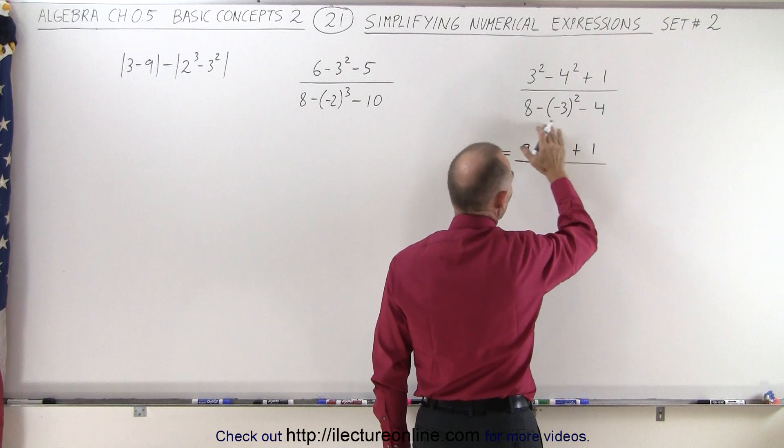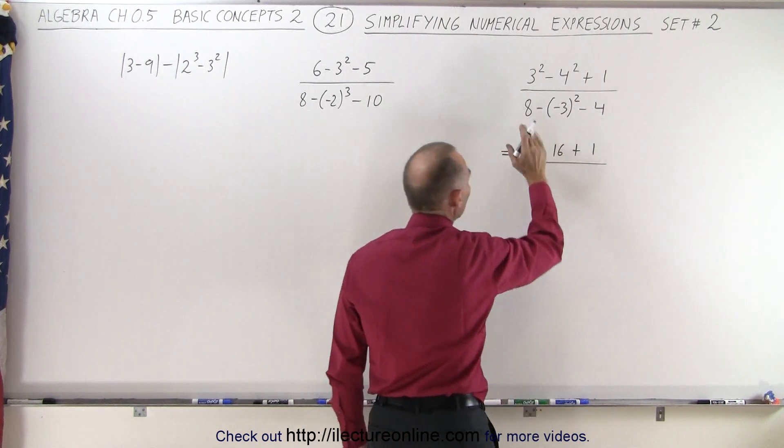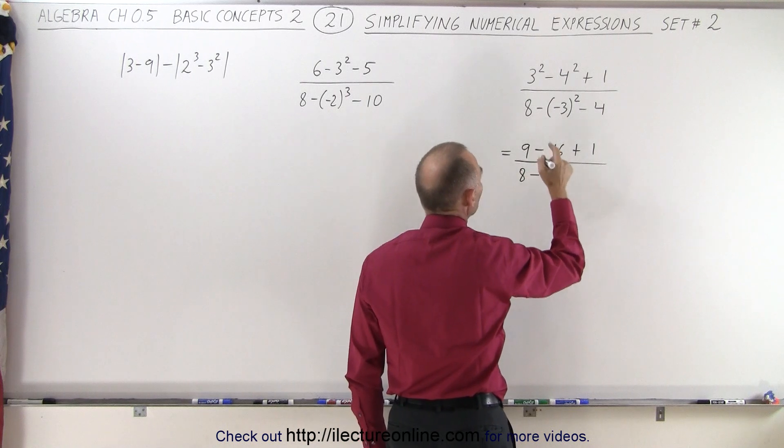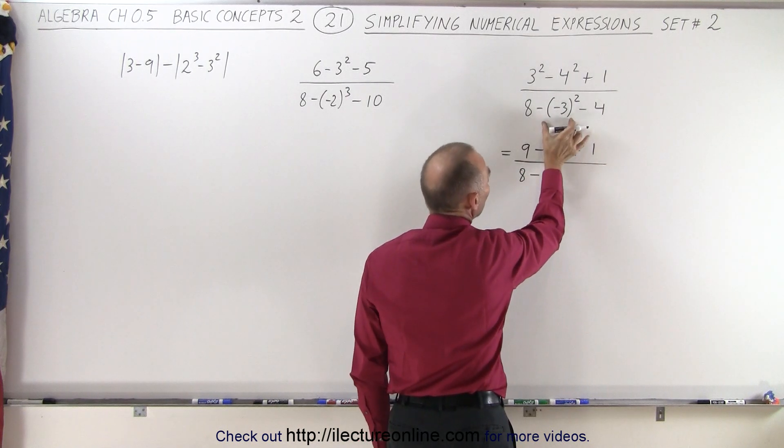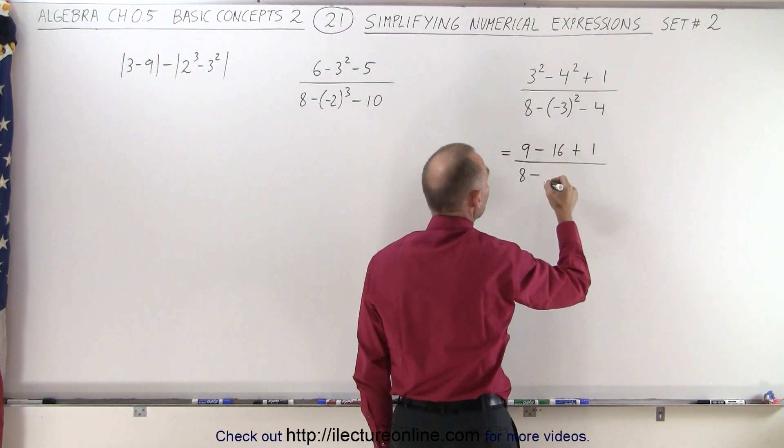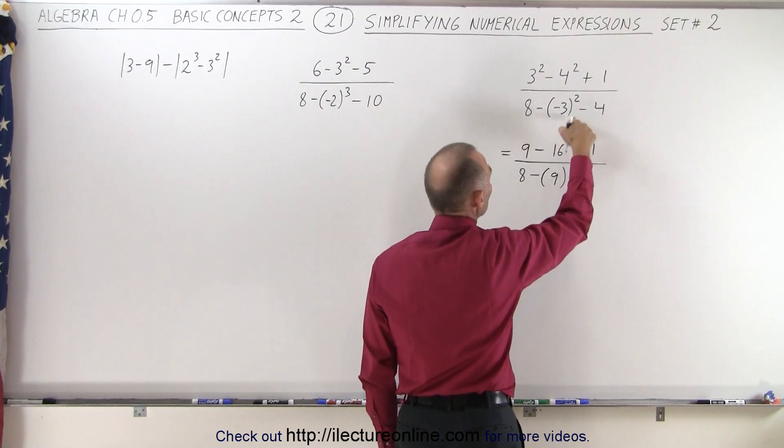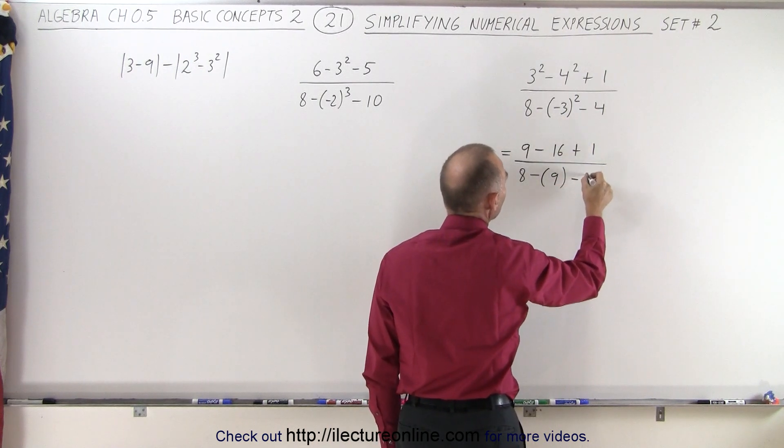And we can also simplify the denominator, but not together with the numerator, so we do that separately. So we have 8 minus the minus 3 quantity squared, so this is minus 3 times minus 3, which is a positive 9, but we're subtracting it from the 8. So negative 3 squared is positive 9, minus 4.